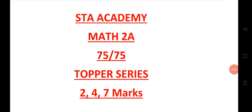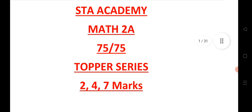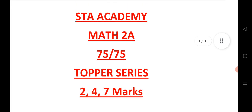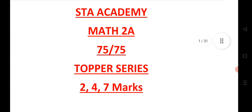Welcome to STA Academy. Today we are going to discuss about Math 2A, 75 out of 75 topper series for 2 marks, 4 marks, and 7 marks. Before starting, I would like to tell you the important questions of mathematics we have given here for 2A. For physics and chemistry, the link is available in the description for all 60 out of 60 marks.